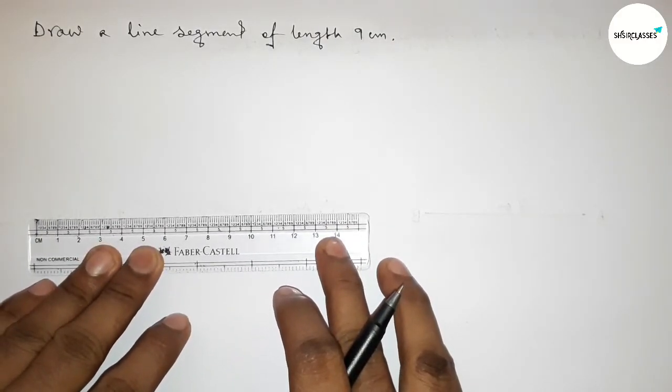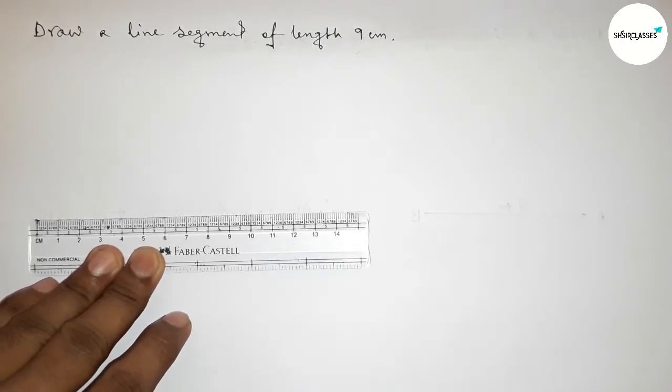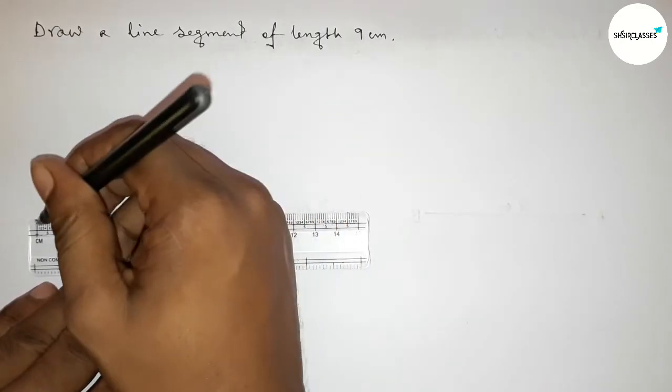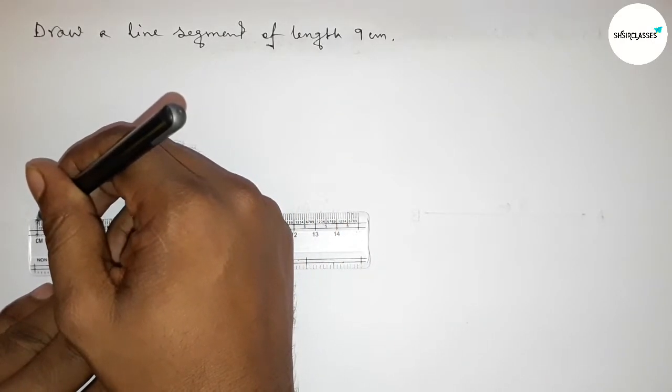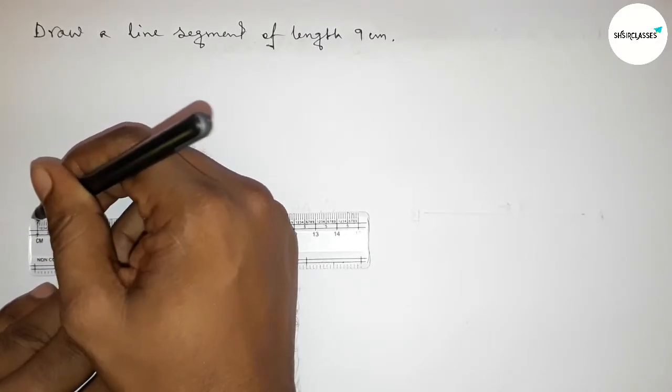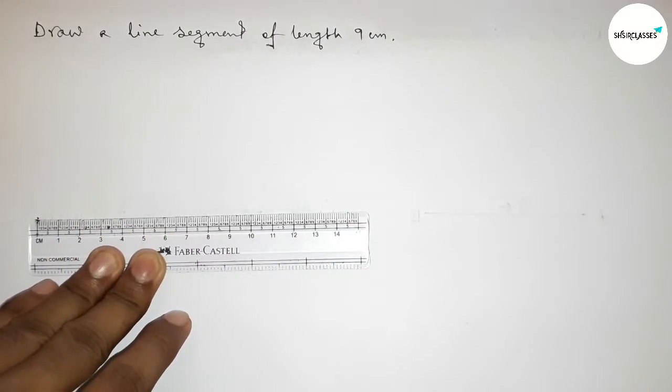First, we're marking here the starting point at 0, so this is 0, then counting.